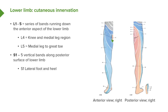Looking at L1 to L5, these are a series of bands running down the anterior aspect of the lower limb. Around the knee region and medial leg we have L4, and from the medial leg to the great toe we have L5. S1 to S5 forms more vertical bands running up the posterior aspect of the lower limb. S1 covers the lateral foot and the heel. So we have the dermatomal distribution running over both the anterior and posterior surfaces of the lower limb.